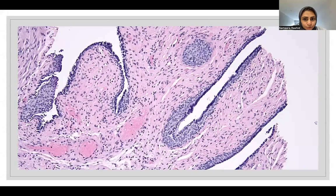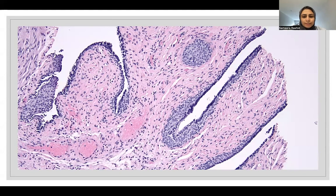The fallopian tube epithelium can undergo transitional or metaplastic change, just like any other epithelium. One of the most striking is transitional metaplasia, which can look quite a lot like serous intratubal carcinoma, but there is no atypia and no high mitosis — so this is just metaplastic transitional change. We can also see squamous metaplasia and secretory metaplasia, all kinds of metaplasias in the fallopian tube.